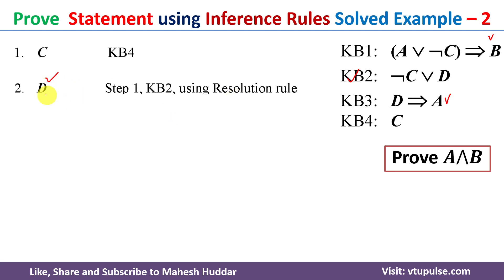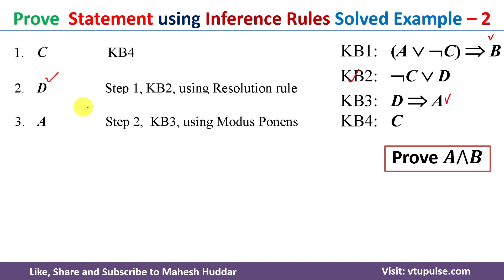Now, between knowledge base 3 and this second step, we apply the modus ponens rule. Knowledge base 3 says D → A, and we have D, so applying modus ponens we get A. That is what the modus ponens rule is all about.